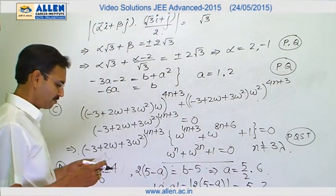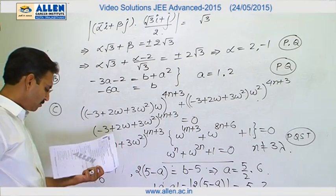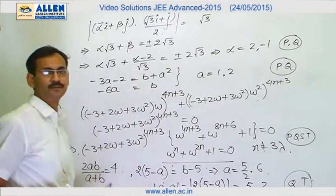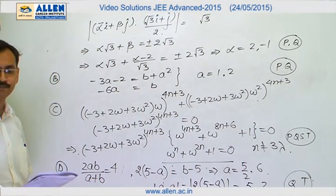So 2 and 5. So Q and T will be the right options. Q and T. That is it.